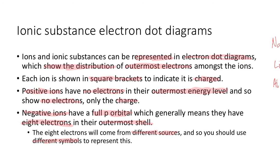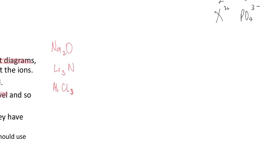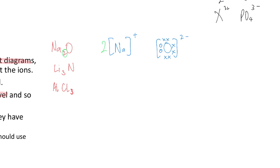Here is sodium oxide as an electron dot diagram. You show the sodium ion — Na with a 1+ charge — and since it's a positive ion that's given away all its outermost electrons, there are none shown around it. The oxygen, on the other hand, has a 2− charge. It brought six of its own electrons, and two came from the sodiums. You also have to show the subscript for Na somewhere in the diagram — you can show that as a coefficient, so 2 Na before the ion.